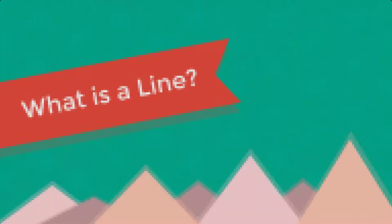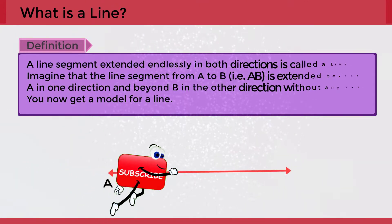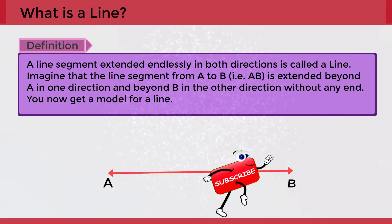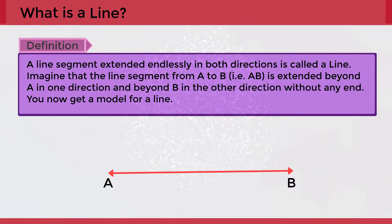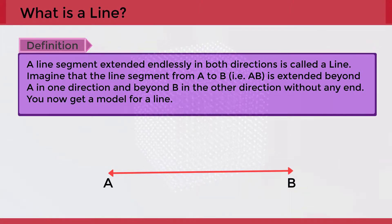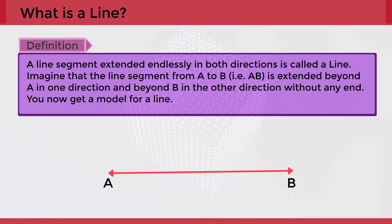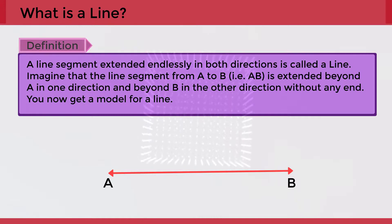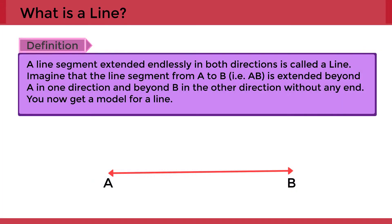What is a line? Definition: A line segment extended endlessly in both directions is called a line. Imagine that the line segment from A to B is extended beyond A in one direction and beyond B in the other direction without any end — you now get a model for a line.